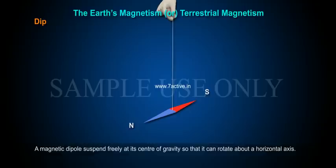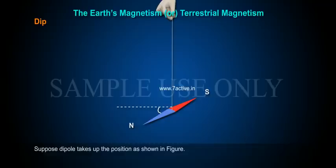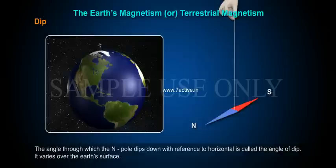Dip: A magnetic dipole suspended freely at its center of gravity so that it can rotate about a horizontal axis. Suppose the dipole takes up the position as shown in figure. The angle theta, which the end pole dips down with reference to horizontal, is called the angle of dip.